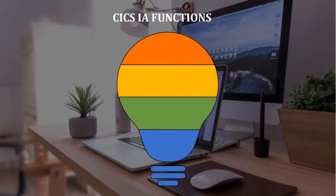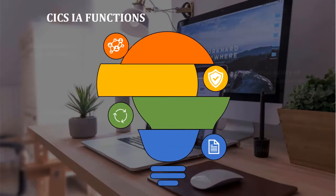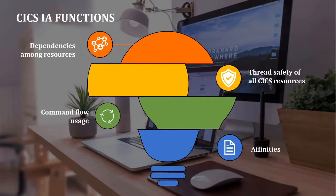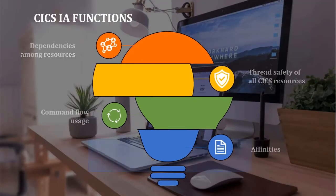KEEX IA has four major functions: dependencies among resources, thread safety of all KEEX resources, command flow usage, and affinities.